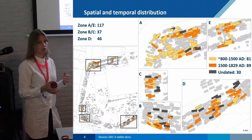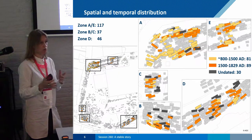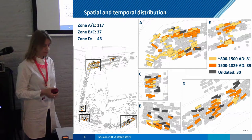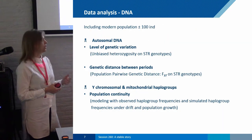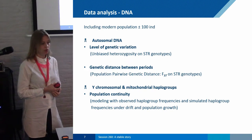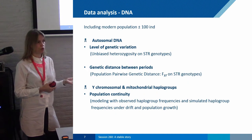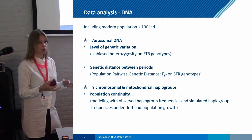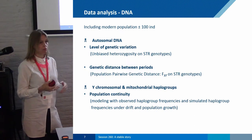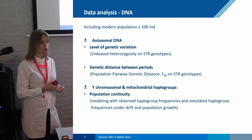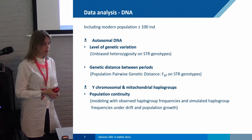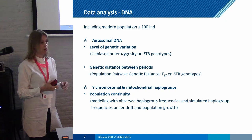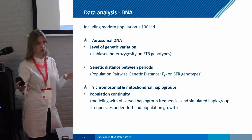Depending on your research question, you can divide your population into different time periods, but for now we chose this one. Still, we had 30 individuals that could not be dated, unfortunately. For the DNA data analysis, looking at autosomal DNA, we examined the level of genetic variation. Low variation indicates a very closed population — what we call inbreeding — meaning not much new DNA from outside is entering the population. We also looked at whether we have population continuity by comparing the type of genetic variation between different periods.